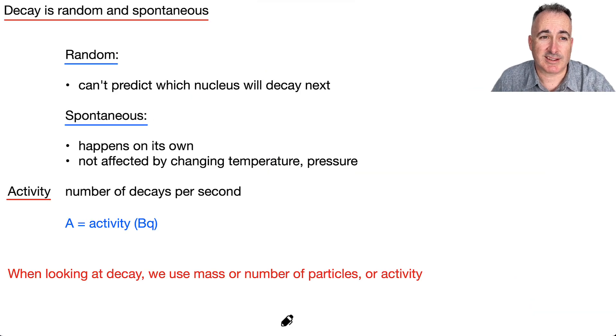So decay now, it's actually random and it's spontaneous. What do we mean by random? It means that you can't actually predict which one is going to decay next. No one can really predict that. And it's spontaneous, which means it happens on its own. If you change a temperature, change a pressure or other things, it doesn't actually affect it. So it seems to be kind of random.